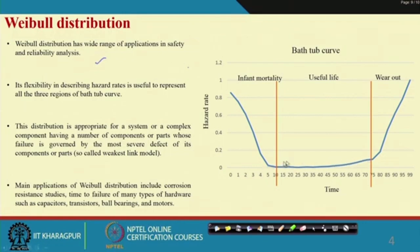When the hazard rate becomes constant, it is basically an exponential distribution — meaning exponential is a special case of Weibull distribution. This makes it a very flexible distribution. It is appropriate for a system of complex components where failure is governed by the most severe defect of its components or parts.